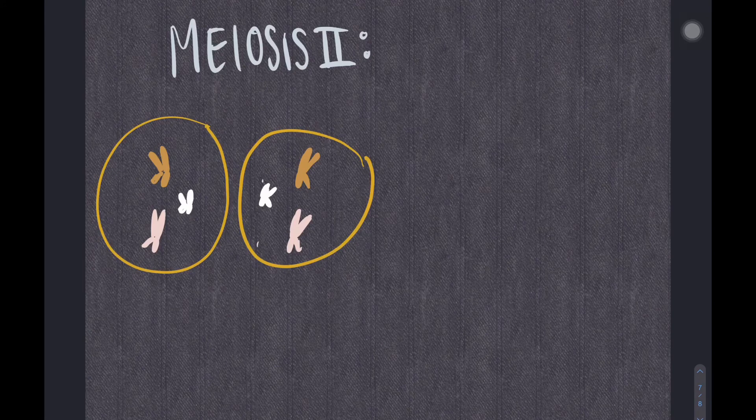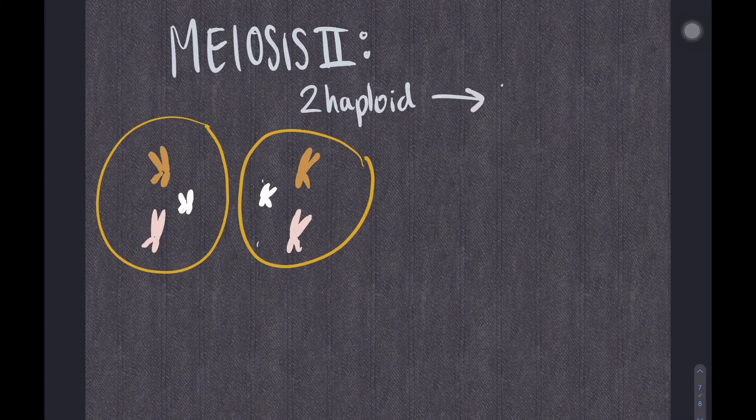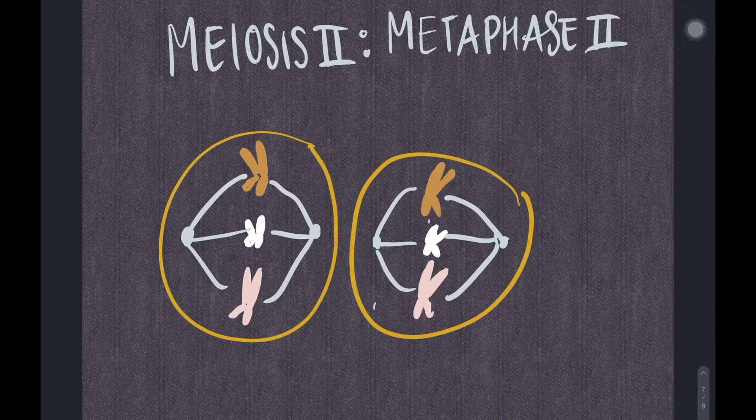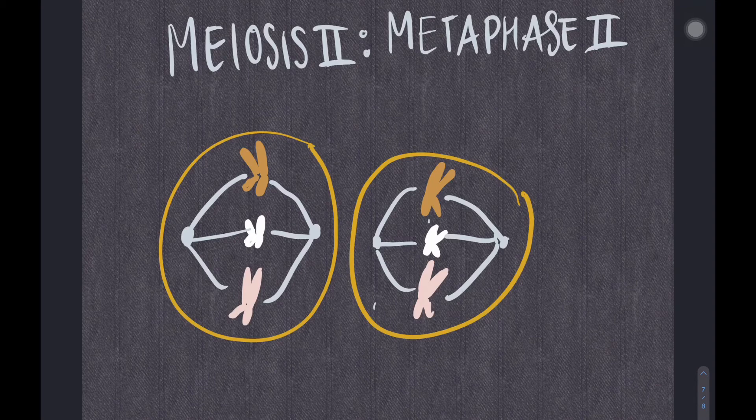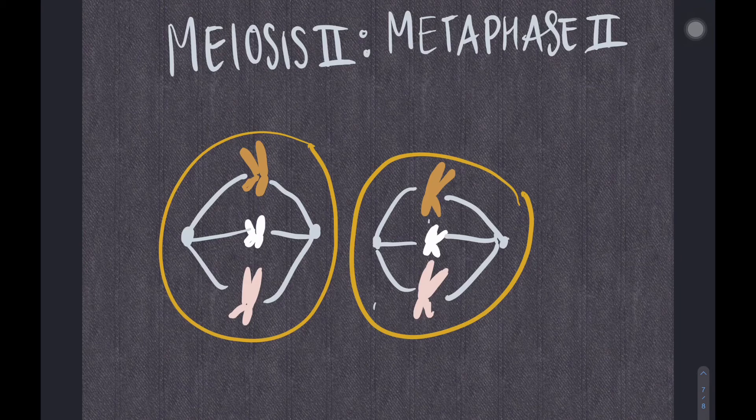Meiosis II is where the sister chromatids separate. In other words, two haploid cells divide into four haploid daughter cells. The first stage of meiosis II is metaphase II. Now the chromatids are what meet in the middle at the metaphase plate, instead of the tetrads like in metaphase I. Crossing over does not occur between sister chromatids in metaphase II.